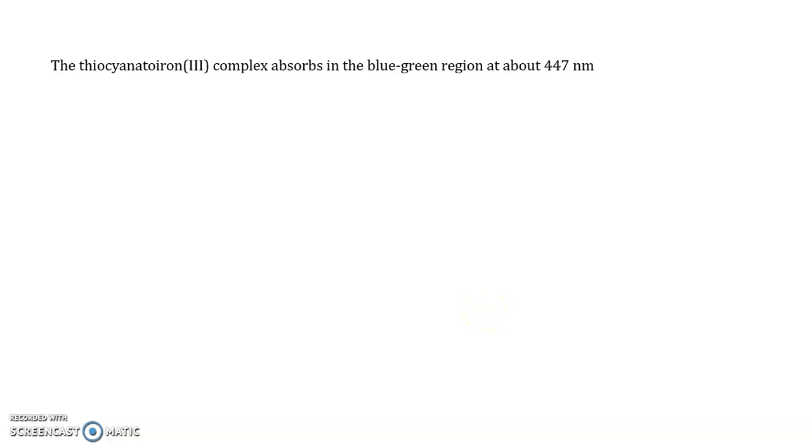The thiocyanato-iron(III) complex ion absorbs in the blue-green region of the visible spectrum at a wavelength of about 447 nanometers. We take advantage of this absorption by making use of the Beer-Lambert law. The equilibrium concentrations of the complex can be determined through the use of a Beer-Lambert plot.